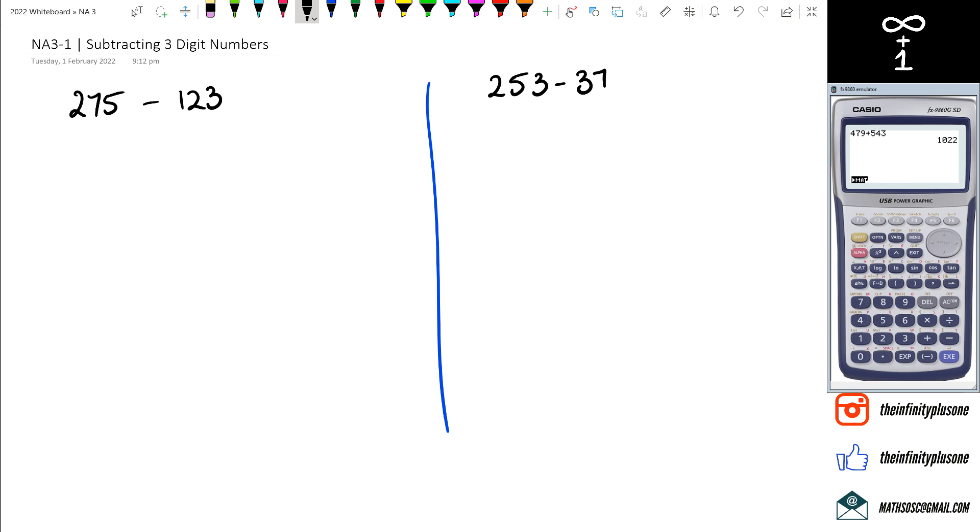Nothing different to what we did with the previous video in the series with adding three-digit numbers. We're just going to subtract these numbers, but we're going to stack them in those columns. We've got our ones column, then our tens column, and then our hundreds column.